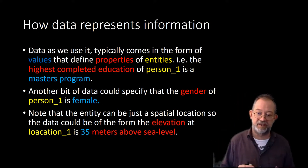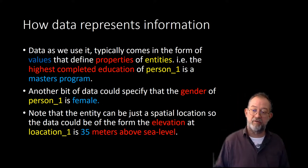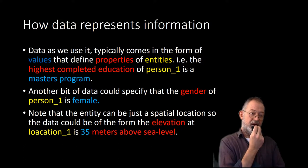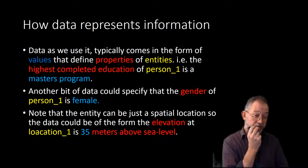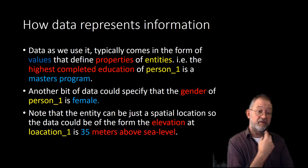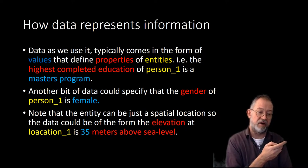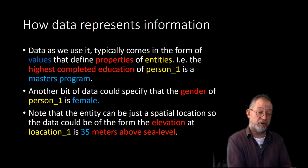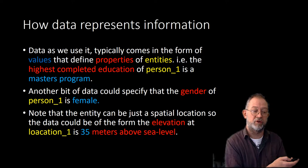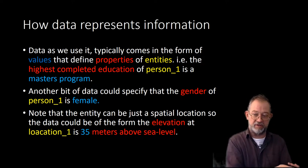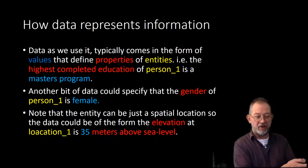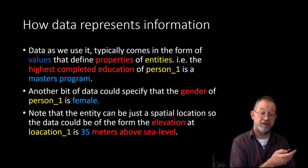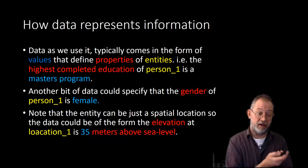There are some things we should be cautious about, specifically when it comes to spatial locations. In that case, location becomes an entity. For example, 'elevation in meters above sea level' is the property we're interested in, the location is our entity, and 35 meters is the value of that property. So specifically when we talk about spatial data, locations also often appear as entities.